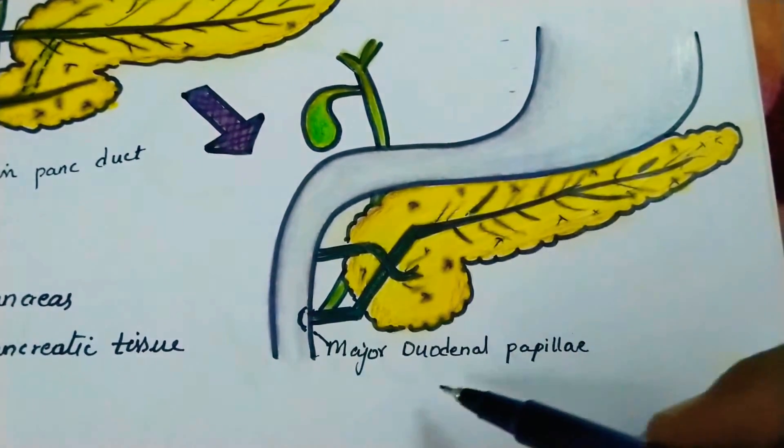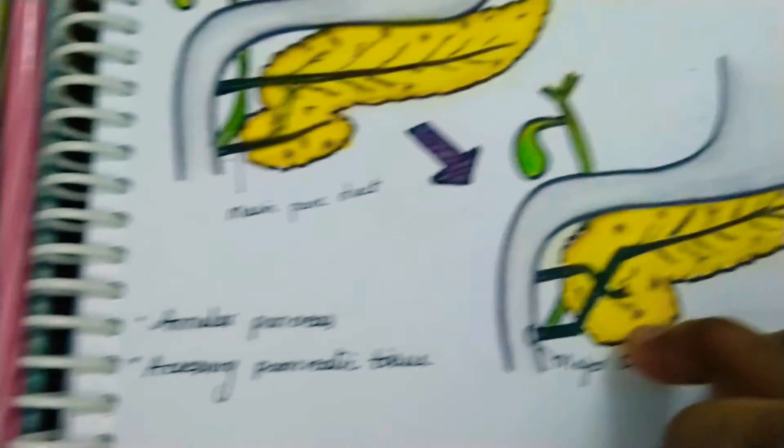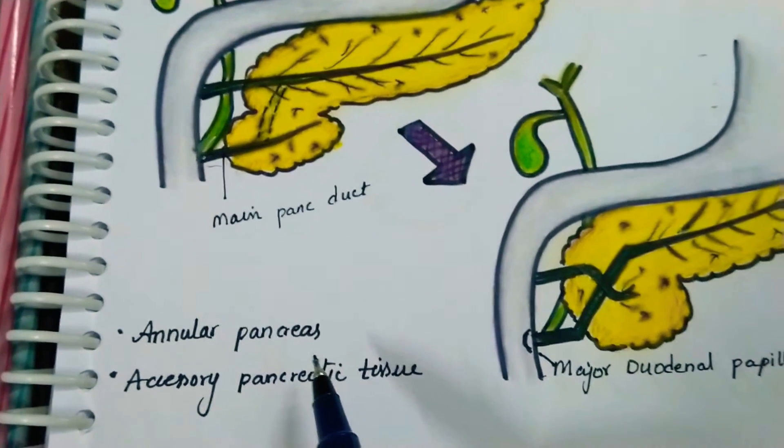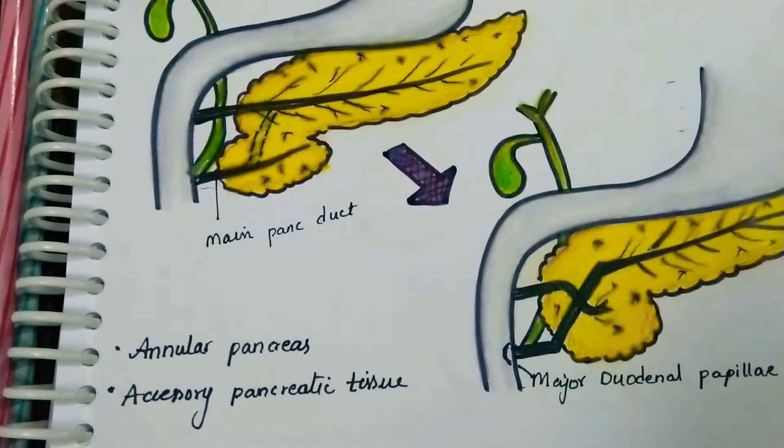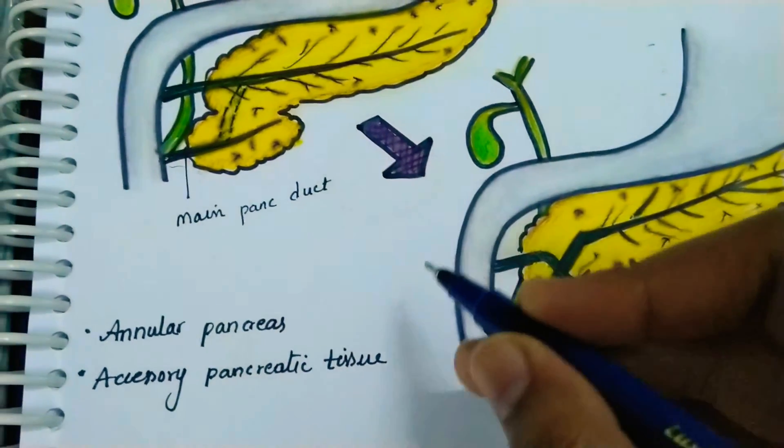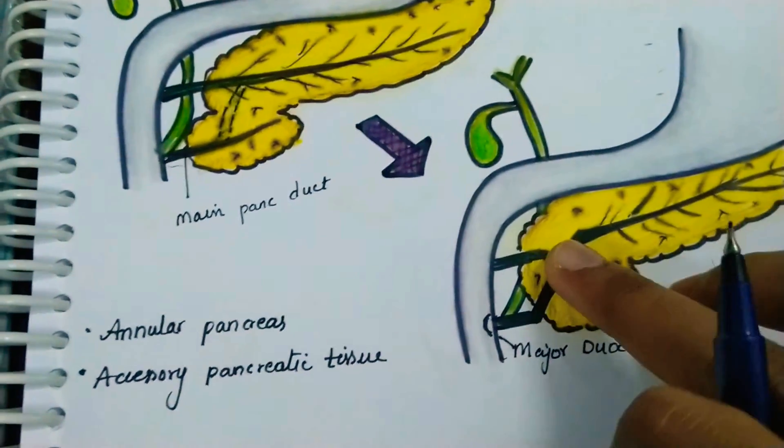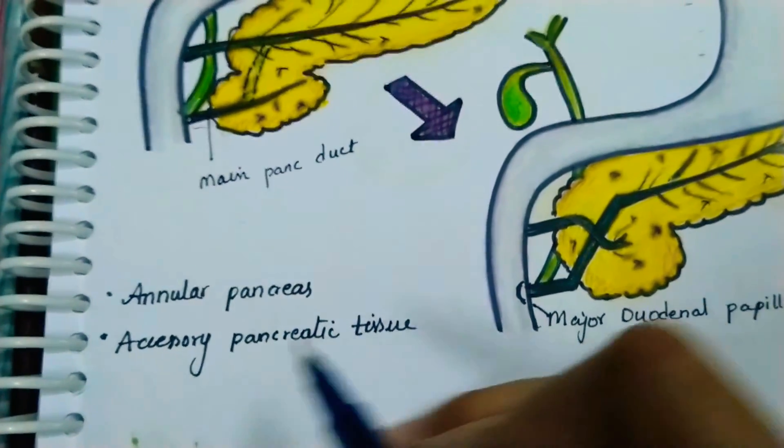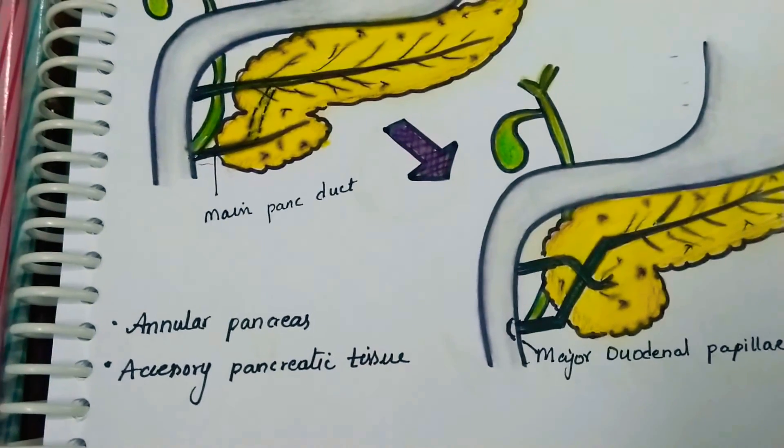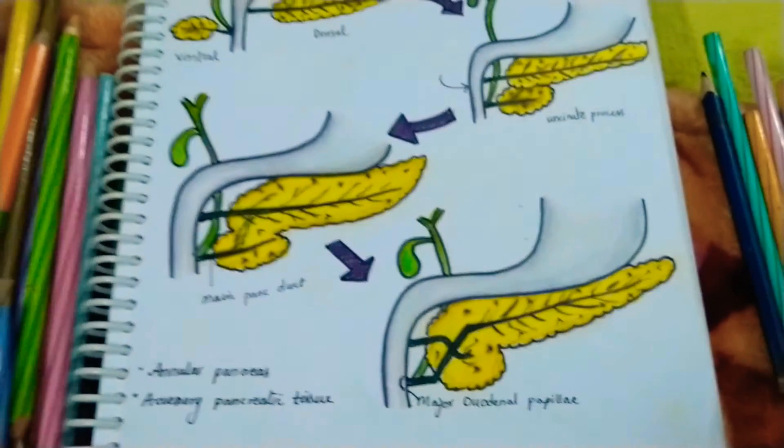Coming to the congenital anomalies: annular pancreas is a developmental anomaly in which the pancreas forms a ring around the duodenum, mainly the second part of the duodenum. Accessory pancreatic tissue can be present in the duodenum, stomach wall, small intestine, and Meckel's diverticulum.